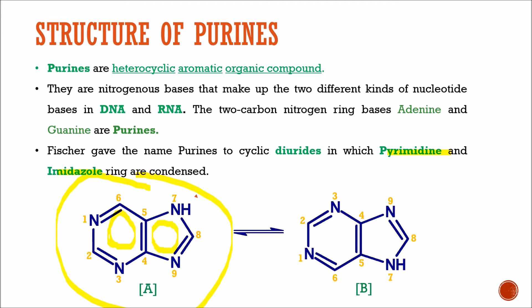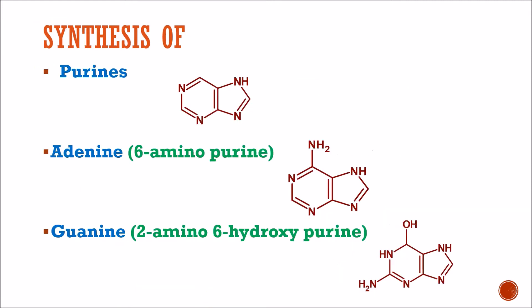The numbering can be done in a normal way to give the minimum number to the nitrogen atom. So we start here: one, two, three, four, five, six, seven, eight, and nine. So now we will study the synthesis of these three structures — purine, adenine, and guanine.